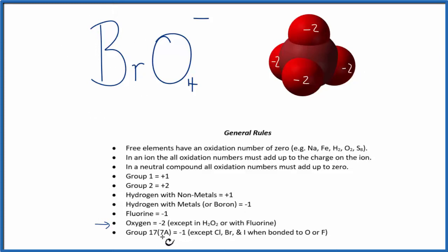So bromine, that's in group 17, and normally that is a negative 1 oxidation number, but when it's bonded to oxygen, we can't use this rule here. So we're going to have to figure out the oxidation number on the bromine based on these numbers here and the charge.